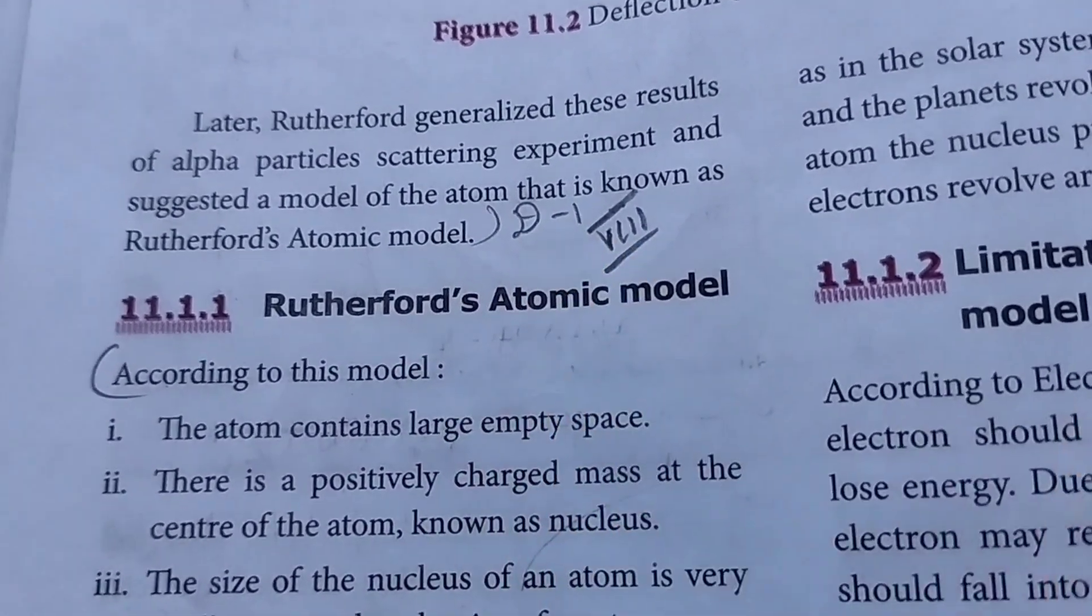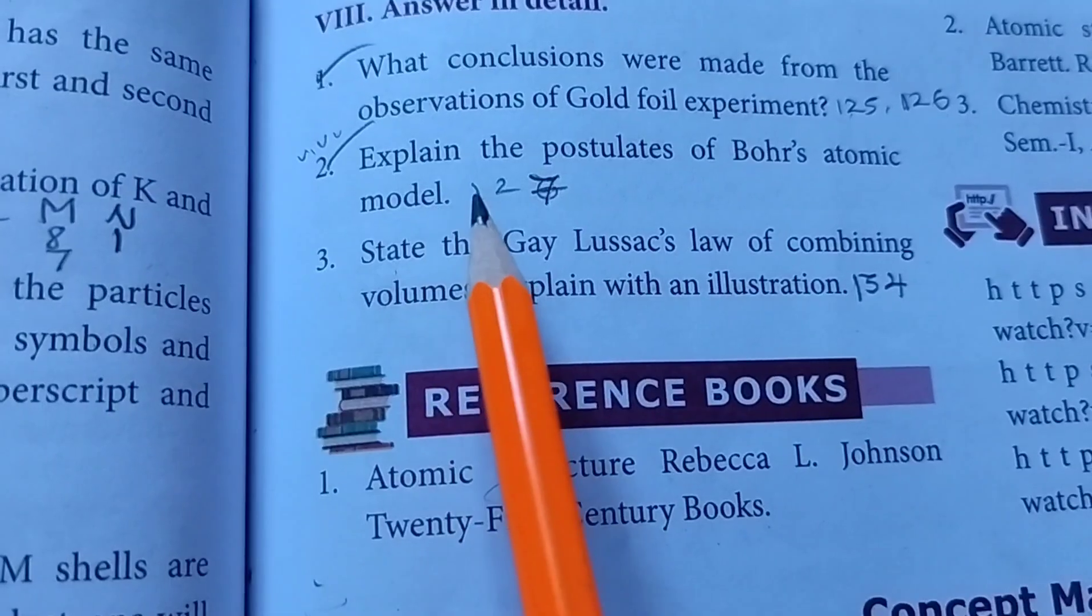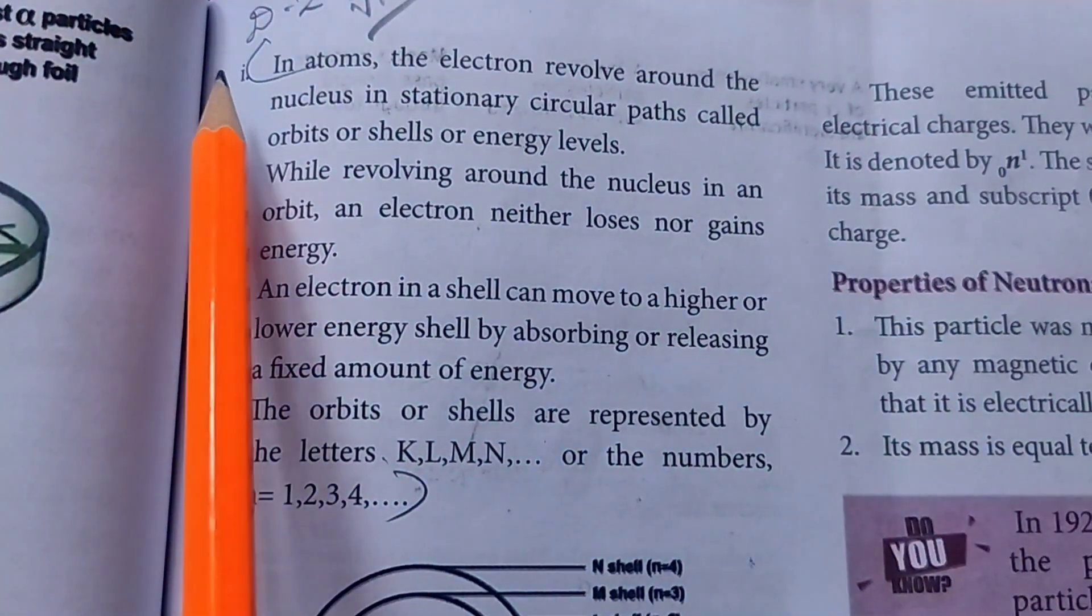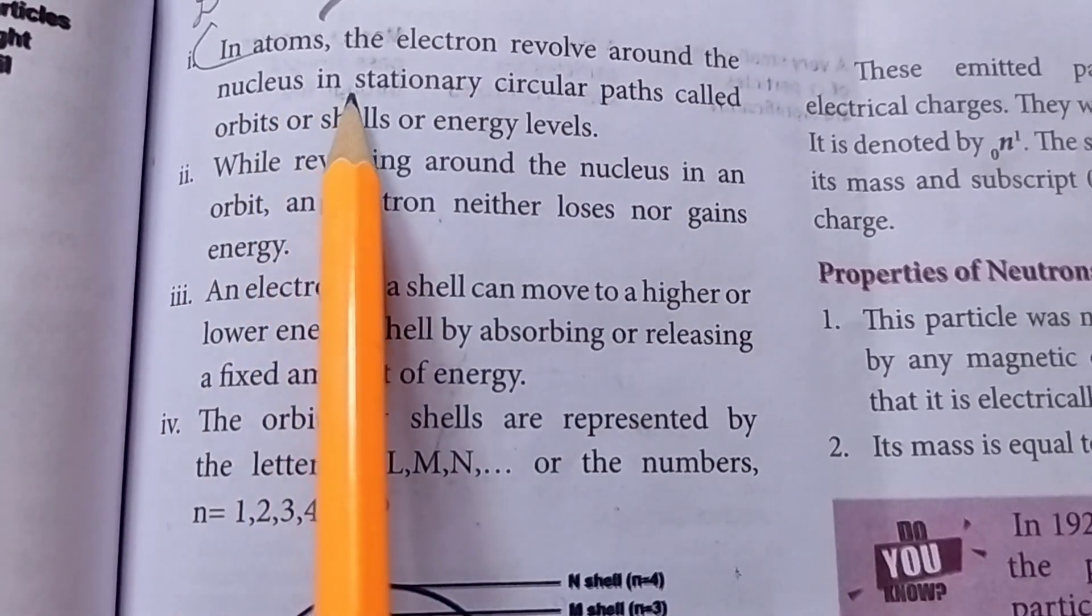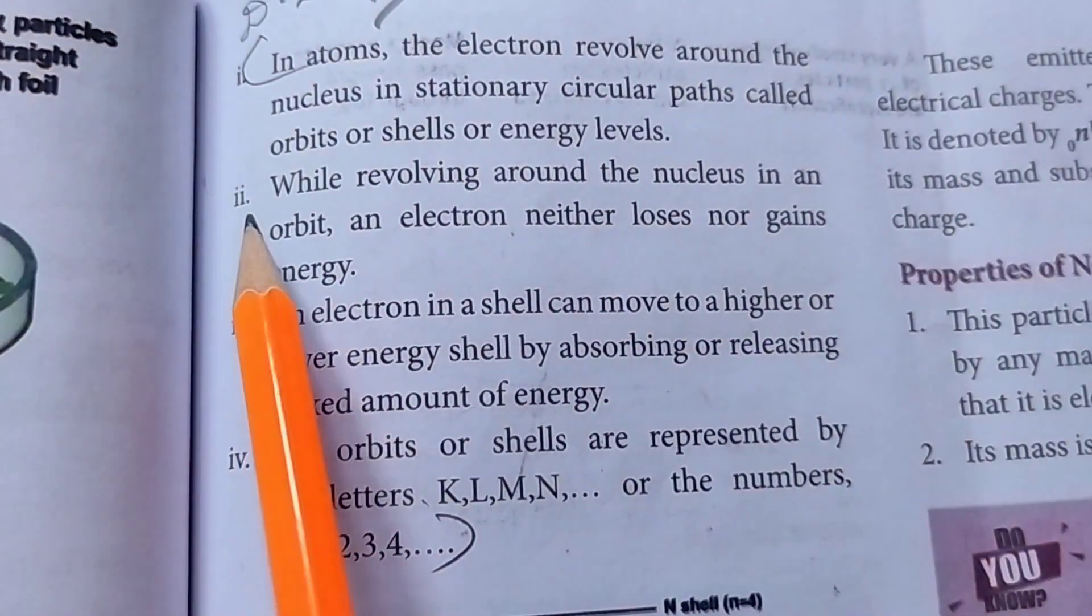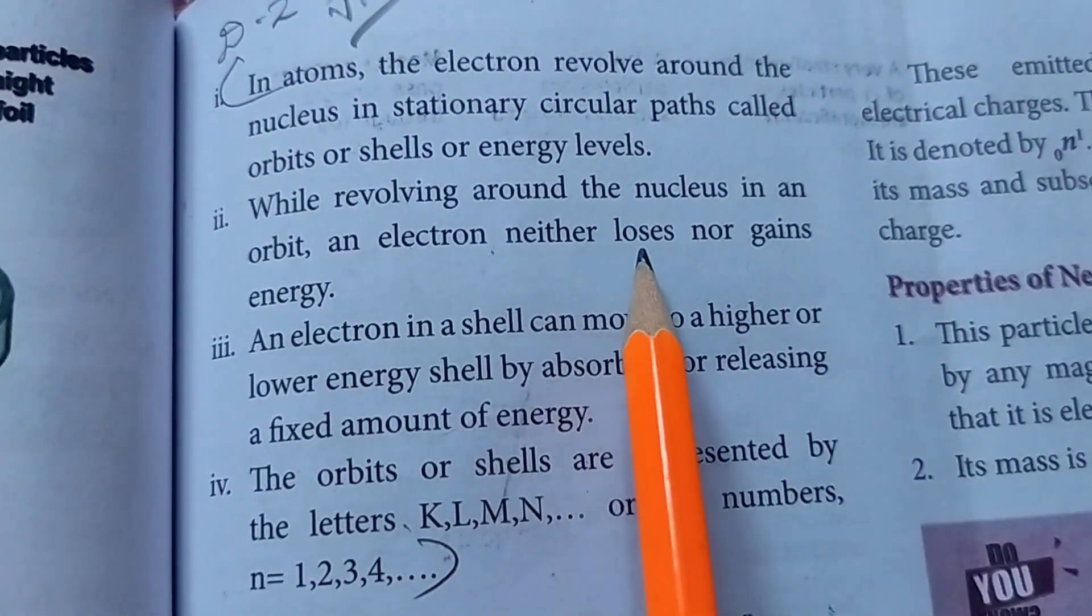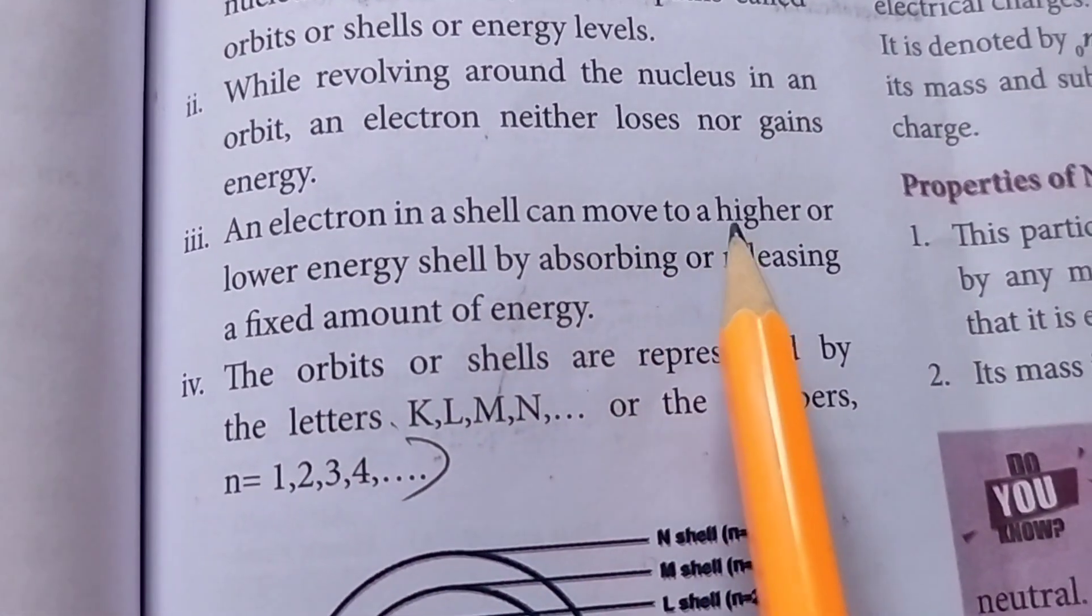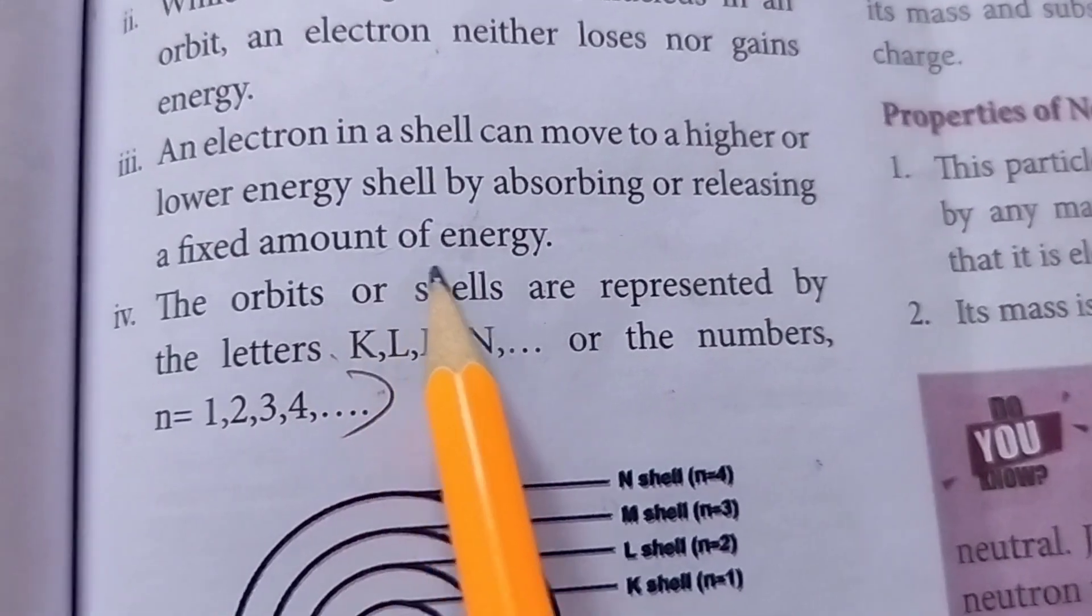Then second question. Explain the postulates of Bohr's atomic model. Take page number 127. First point, in atoms, the electrons revolve around the nucleus in stationary circular paths called orbits or shells or energy levels. Second point, while revolving around the nucleus in an orbit, an electron neither loses nor gains energy. Third point, an electron in a shell can move to a higher or lower energy shell by absorbing or releasing a fixed amount of energy.